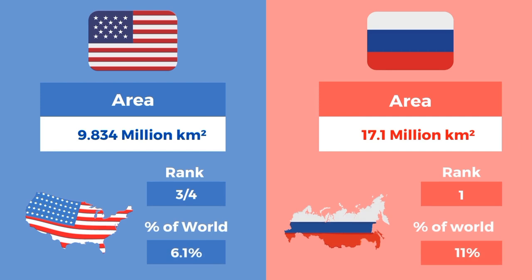The area of the US is 9.834 million square kilometers, ranked 4th, and contains 6.1% of the world's area. The area of Russia is 17.1 million square kilometers, ranked 1st, and contains 11% of the world's area.